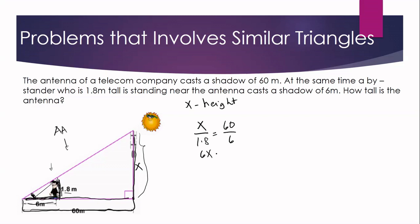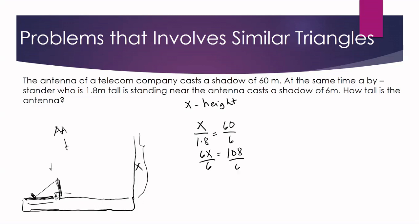Cross-multiplying gives us 6X = 1.8 × 60 = 108. To solve for X, we divide both sides by 6, so X = 108 ÷ 6 = 18. To answer the question, how tall is the antenna? Therefore, the antenna is 18 meters.